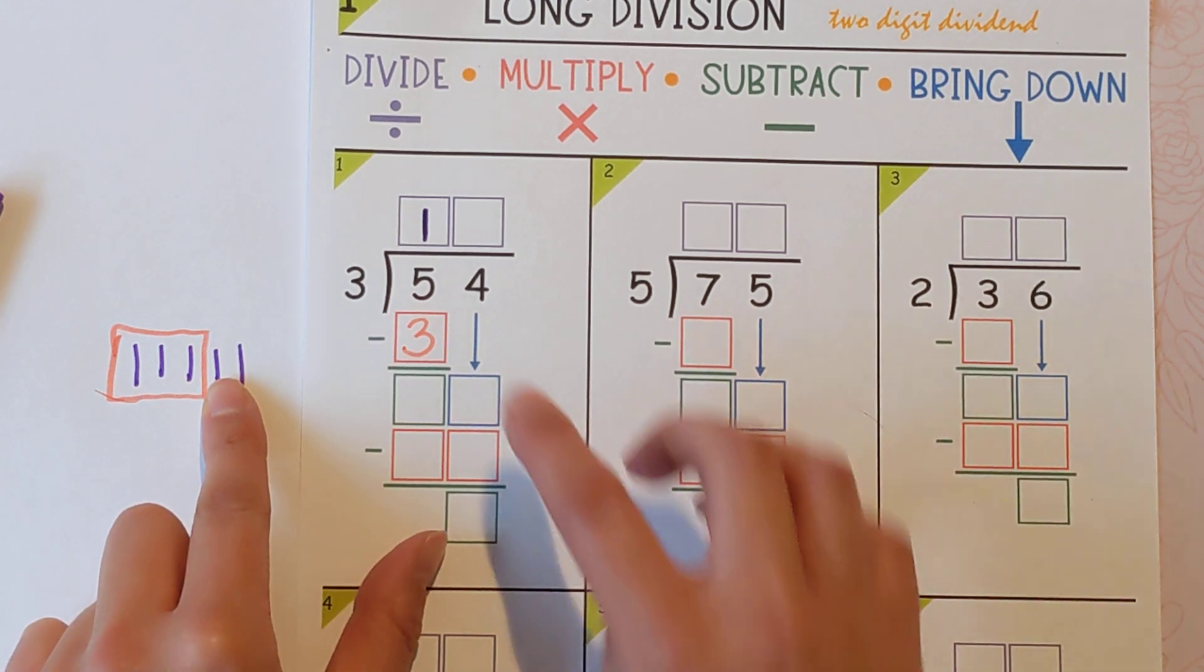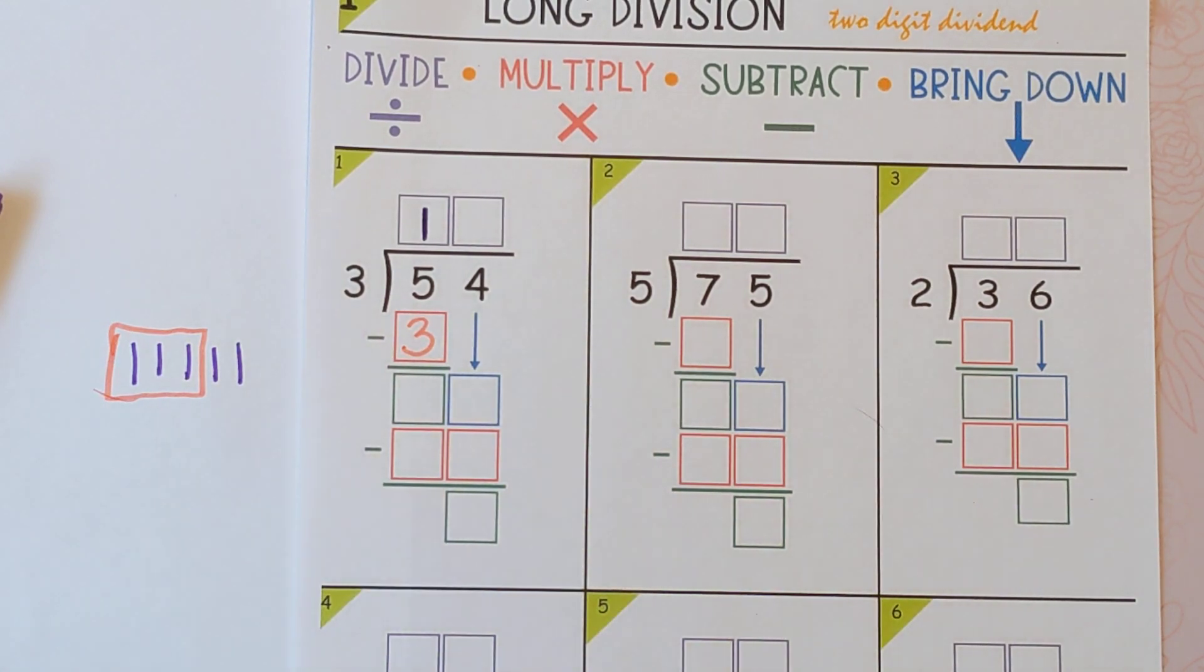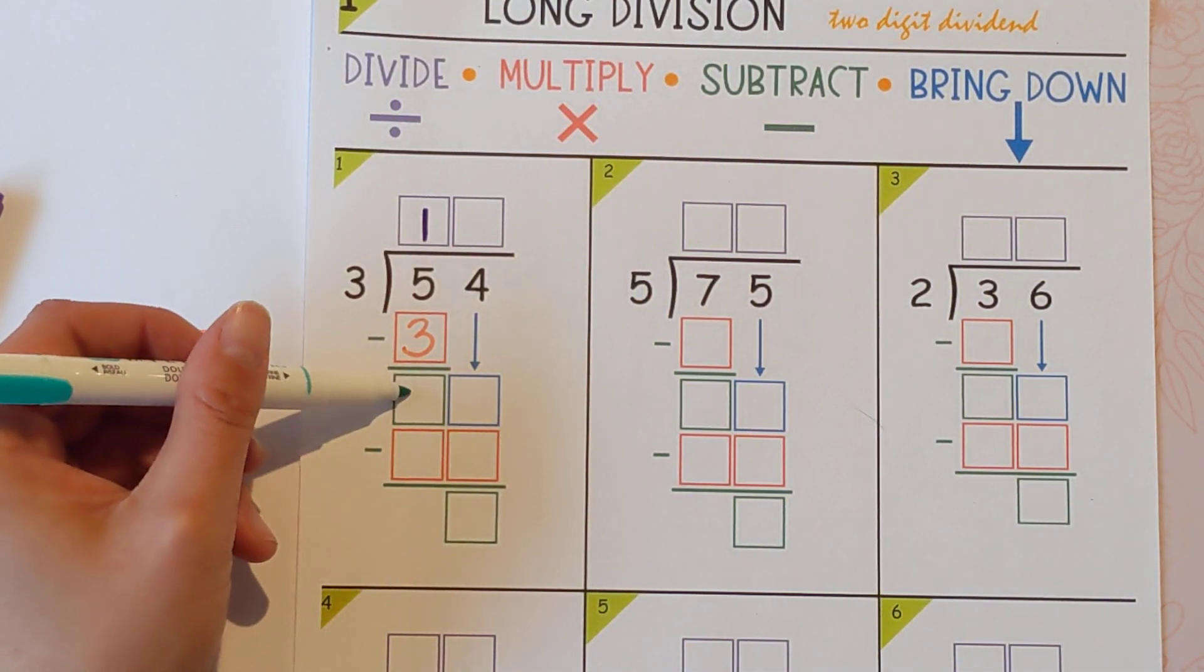So then the next step is to subtract five minus three to figure out how many are left over that we're still working with. Five minus three is two.